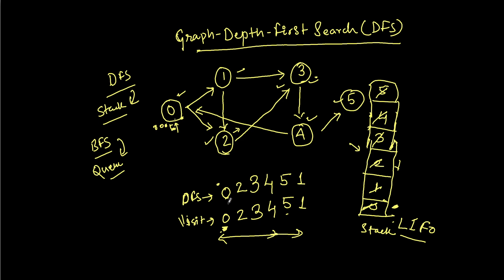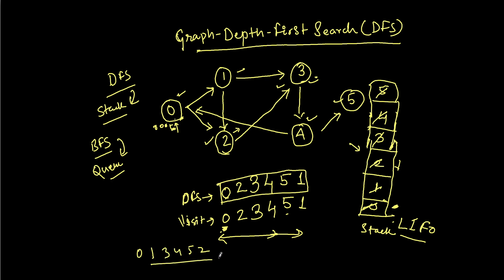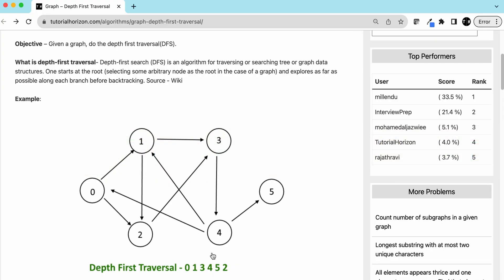The final DFS order depends on the order in which you add neighbor nodes to the stack. When we started from zero, we added one and two. Had we added two and one instead, our DFS would have been zero, one, three, four, five, two. This is also correct.